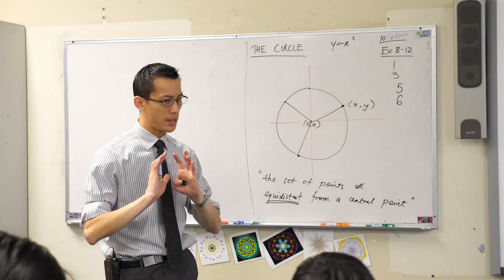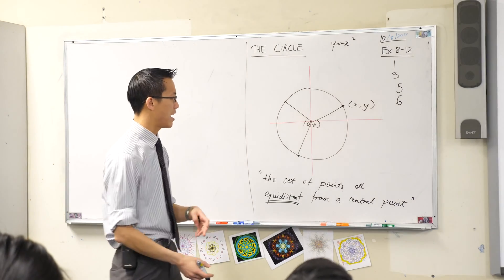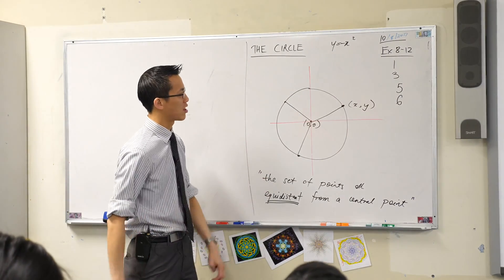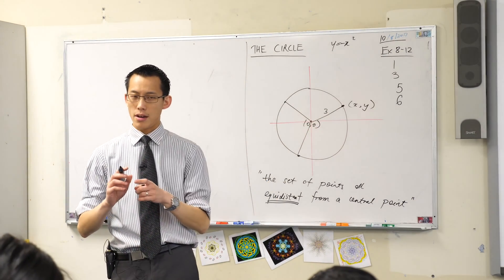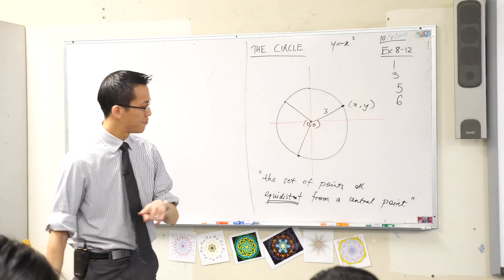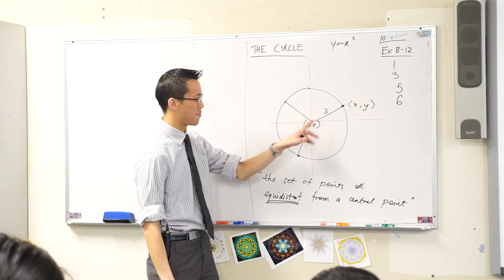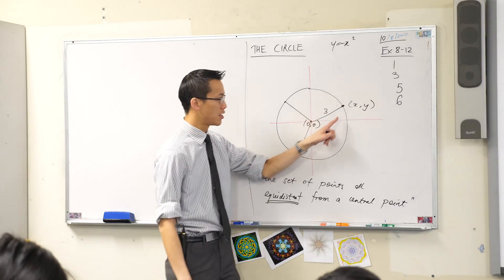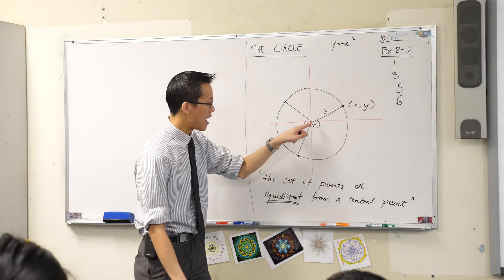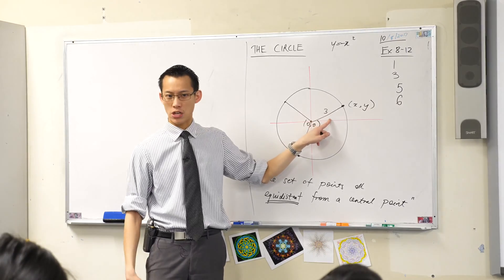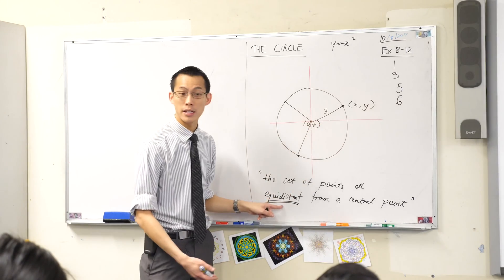Just for the sake of illustration, let's make the radius of the circle a nice easy number like three. I know that the distance from the origin, the center, to this point on the circumference, wherever it happens to be, is three because it should be three everywhere. That's what this means.